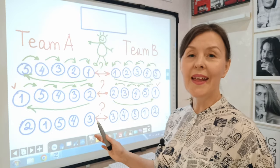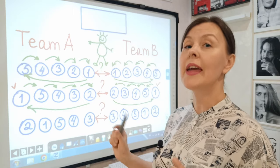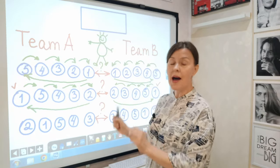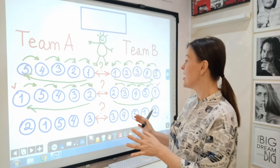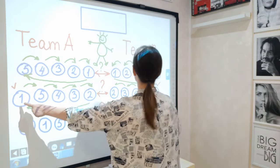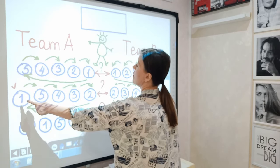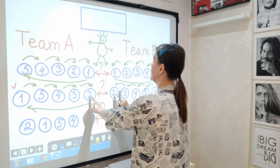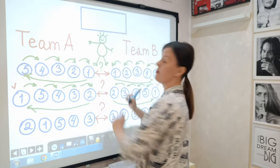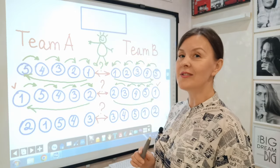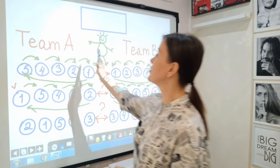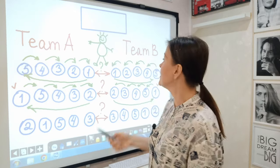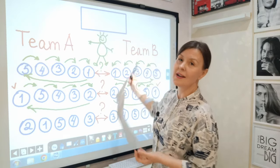Continue playing the game like this. The game is over when students make a full circle and come back to their initial seats — for example, the students who started the game are back to their places at the beginning of the rows. In the second round of the game, those students who asked questions — team A — will answer questions, and team B will ask them.